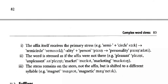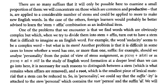Affixes themselves receive the primary stress, and we consider word stress when affixes were not there. For example: 'pleasant' becomes 'unpleasant', and 'market' becomes 'marketing'. The stem is originally in the word and the stress remains on the stem, not the affix. However, stress can shift — for example, 'magnet' becomes 'magnetic', shifting from the first to the second or third syllable.